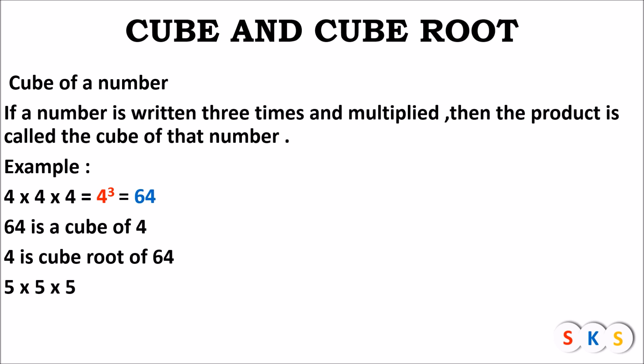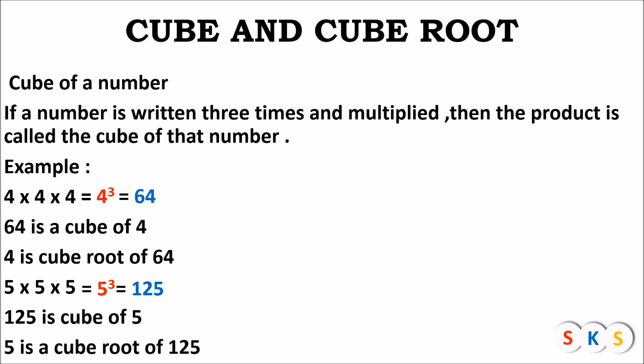5 into 5 into 5 can be written as 5 raised to 3, which equals 125. So the cube of 5 is 125. Cube means if any number is taken 3 times in a multiplication, the product obtained is known as the cube of the number. Therefore 5 is the cube root of 125.